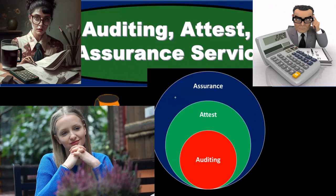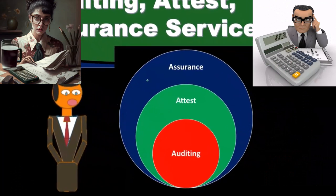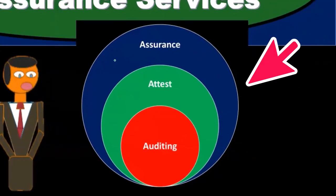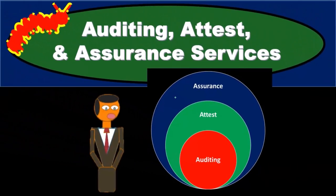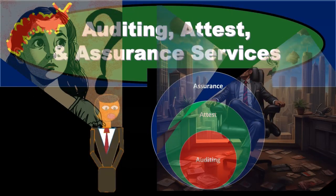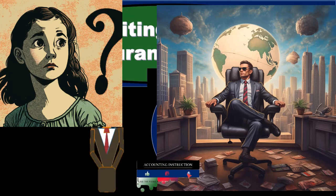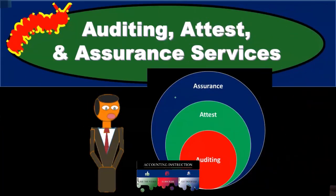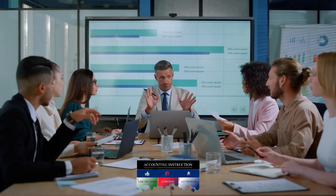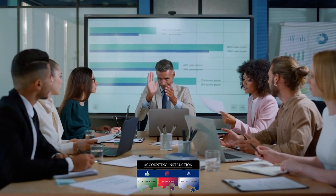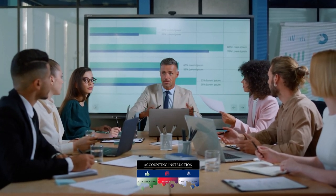We often hear different terms being used in different contexts in a similar way, and we may start to think these are basically the same thing. That's because there is some overlap, but they aren't the same thing. So what we want to do is be able to know what that overlap is — so when we hear or use these terms in different areas, we use them properly and know when they can be used interchangeably.